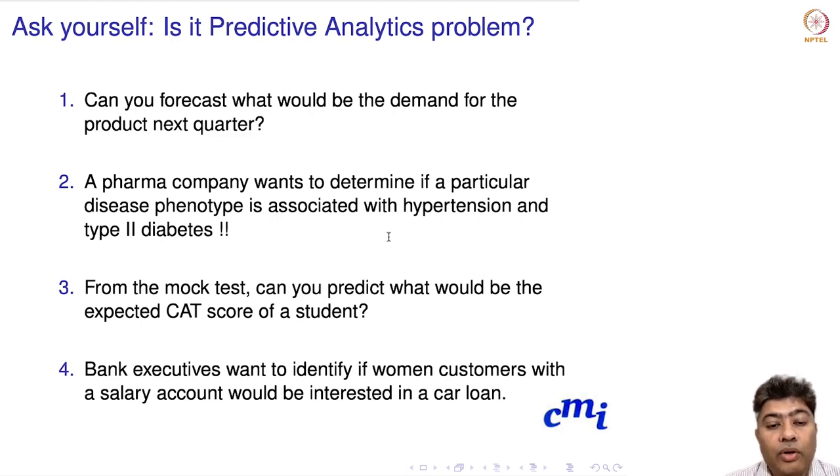Third question: From mock test scores, can you predict what the expected CAT score for a student would be? And the fourth question: Bank executives want to identify if a woman customer with a salary account would be interested in a car loan. Pause your video for a while, think about it, write down your answer, and then start the video. I am going to give you the answer in the next slide.